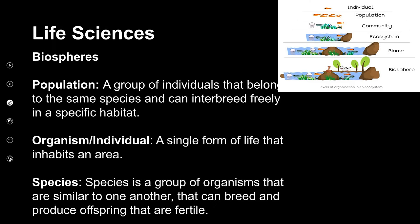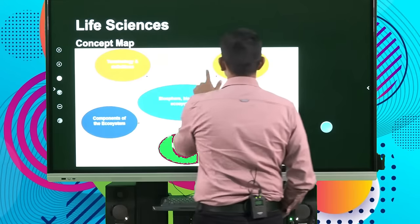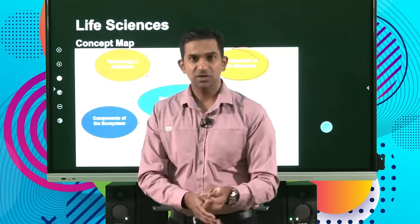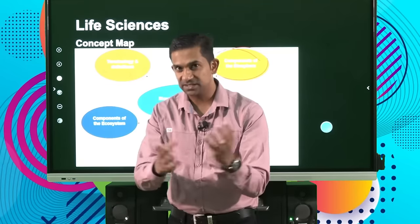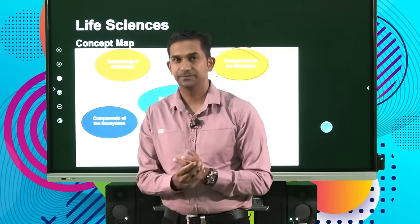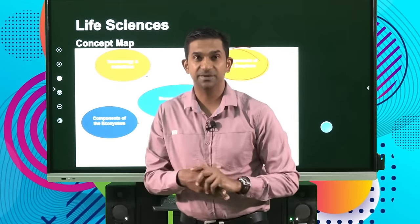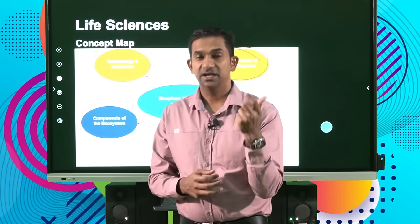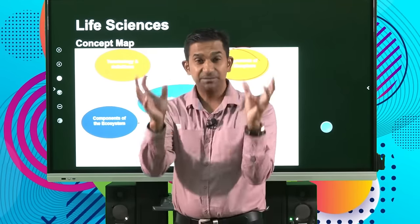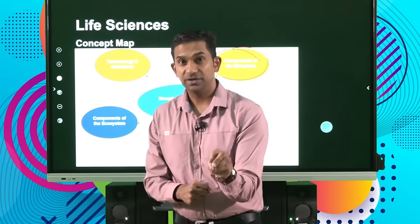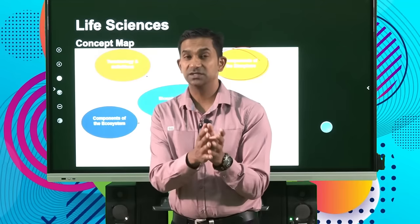We've looked at the biosphere, and ultimately it's important that we recognize that the components of the biosphere range from the smallest individual to the most complex systems. We've looked at the three components — the lithosphere, atmosphere, and the hydrosphere — and we've unpacked what a biosphere is made up of, right down to the simple organism that we refer to as individuals in a population.